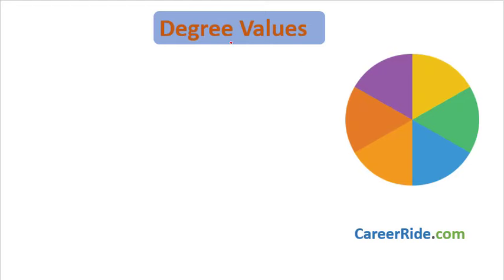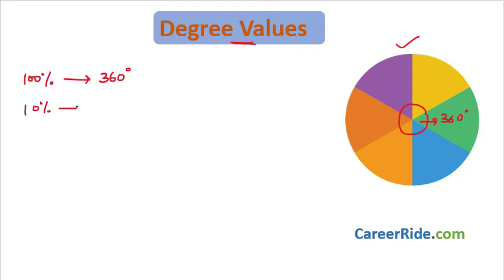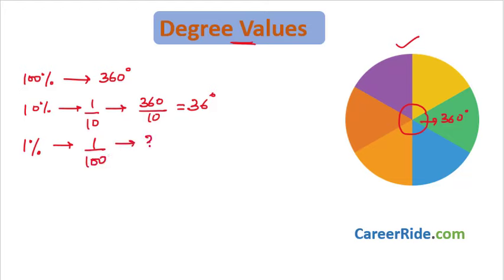It is also important to understand degree values. Since a pie chart is a circle, the central angle is 360 degrees. If 100% corresponds to 360 degrees, then 10% is 1/10 of that, which is 360 ÷ 10 = 36 degrees. And 1% equals 360 ÷ 100 = 3.6 degrees. This may not be used directly to solve every question, but it is very handy when approaching the questions.